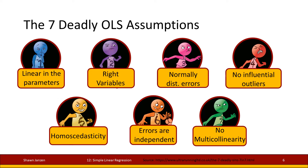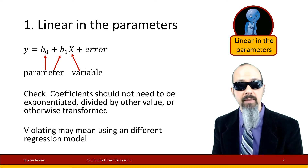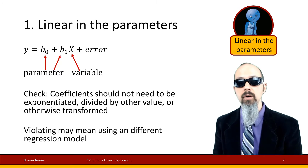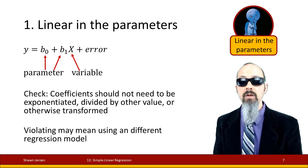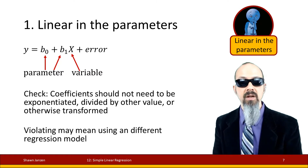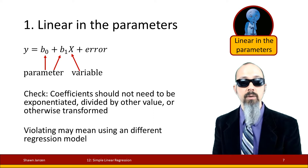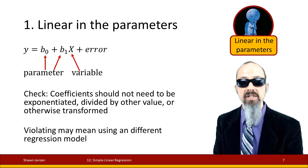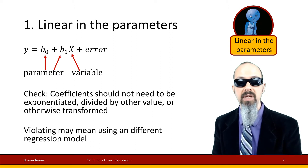The first assumption is linear in the parameters — fancy stats talk. It means that in the linear model you're building, your coefficients (your B's) should not be exponentiated, divided by other scores, or otherwise transformed. We can do that to our variables (X's), but not to the B's. If we transform the B's, we are no longer linear in the parameters. This isn't something we check in R; we just need to make sure our model setup doesn't intentionally manipulate the B's.